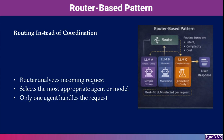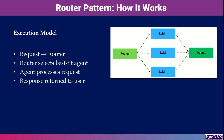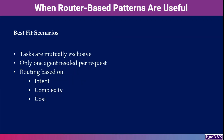Instead of breaking tasks apart, a router simply decides which agent or model should handle the entire request. The router examines the incoming request, selects the most appropriate agent or model, and forwards the request directly. Only one agent processes the request and its response is returned to the user. This pattern works best when tasks are mutually exclusive and only one agent is needed per request.